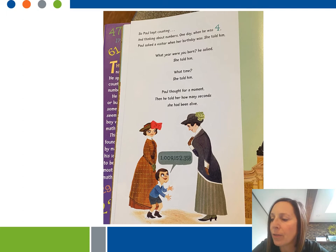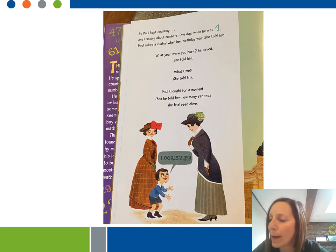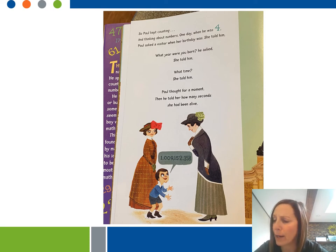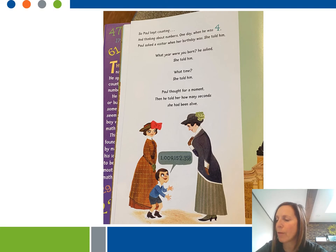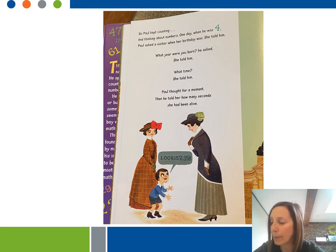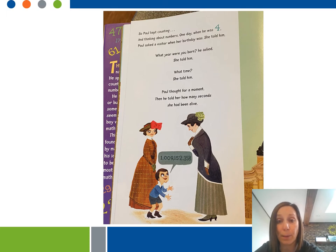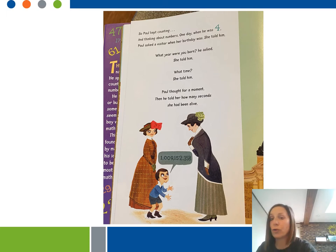Paul kept counting and thinking about numbers. One day, when he was four, Paul asked a visitor when her birthday was. He asked what year she was born and what time. Paul thought for a moment, and then he told her how many seconds she had been alive — that's a really big number. Paul liked this trick and he did it often.